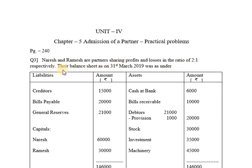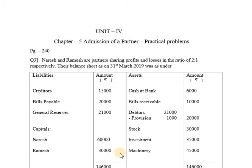2 is to 1 respectively. Their Balance Sheet as on 31st March 2019 was as under. The liabilities side includes: Creditors 15,000; Bills payable 20,000; General reserves 21,000; Naresh capital 60,000; Ramesh capital 30,000. The total of the liabilities side of the balance sheet is 1,46,000.